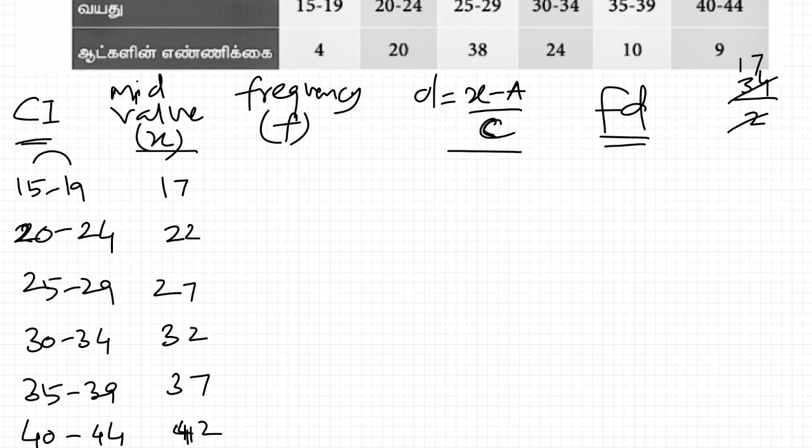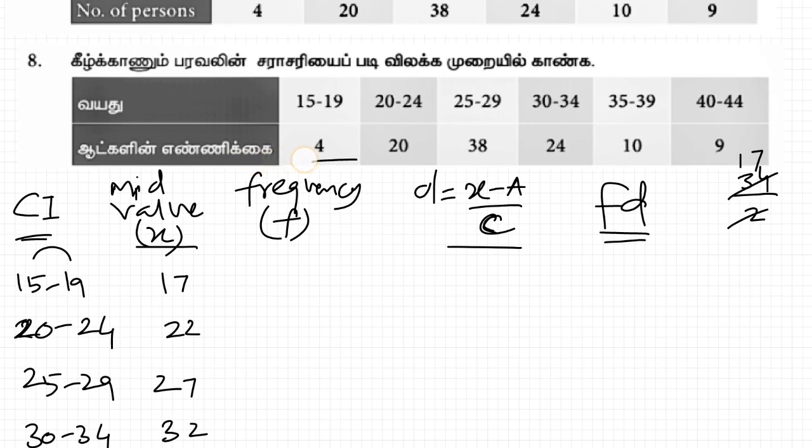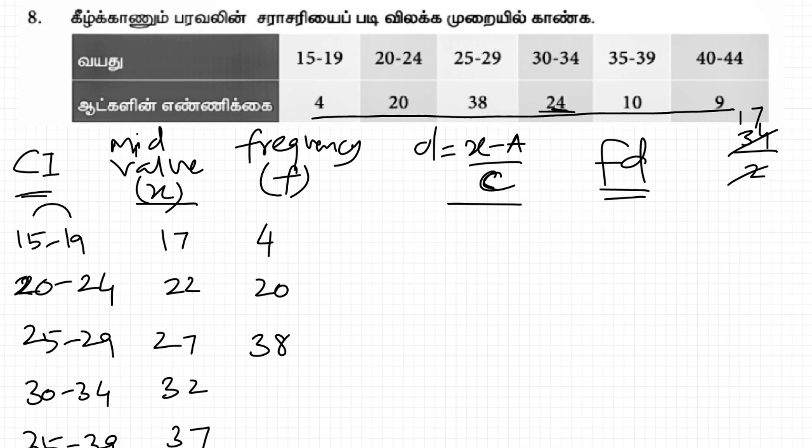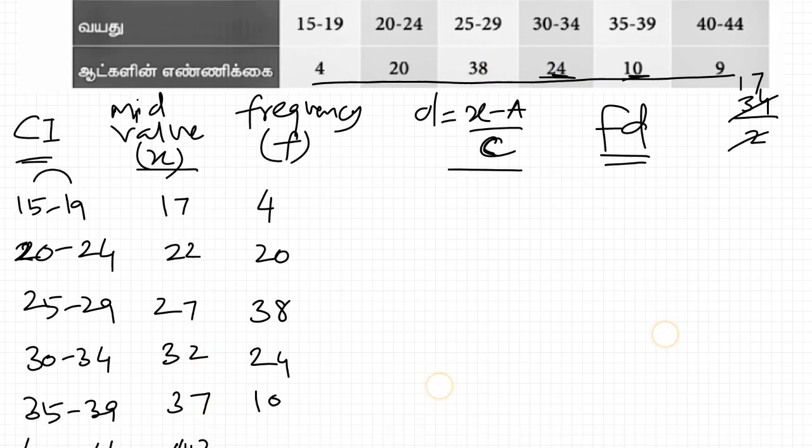Now frequency. Looking at the table, the values are: 4, 20, 38, then frequency is 24, and 10, last one is 9.